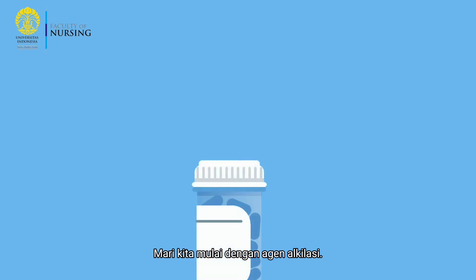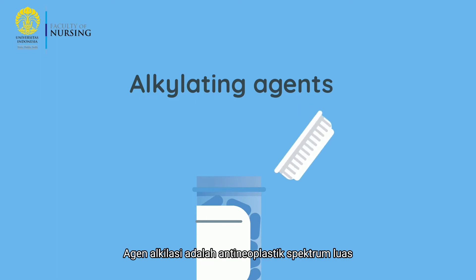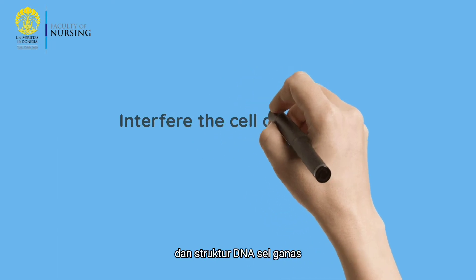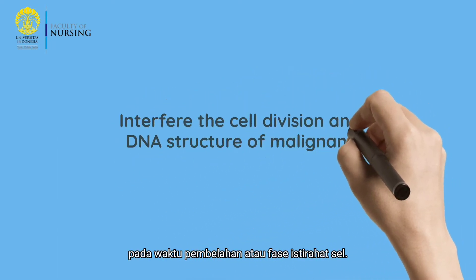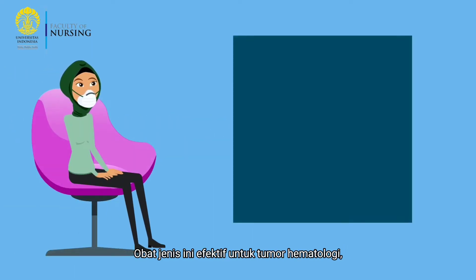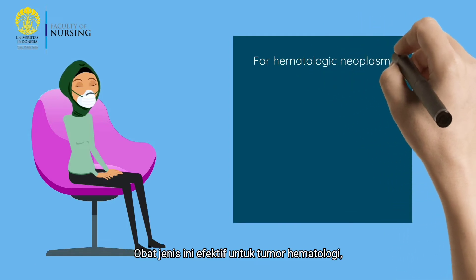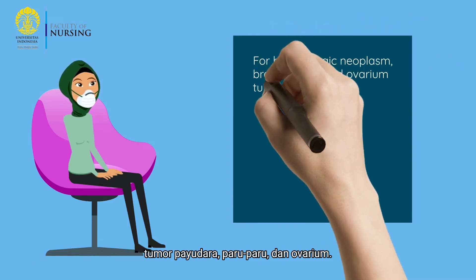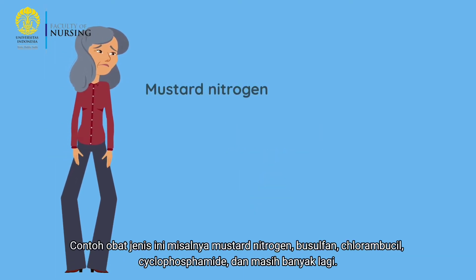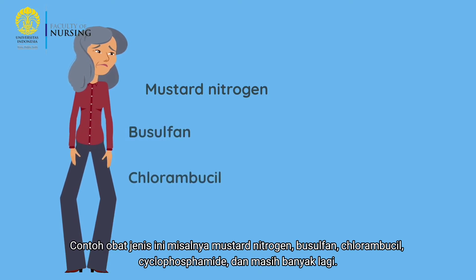Let's start with alkylating agents. Alkylating agents are broad-spectrum antineoplastics that work by interfering with cell division and the DNA structure of malignant cells at the cleavage time or resting phase of the cell. This type of drug is effective for hematologic neoplasms, breast, lung, and ovarian tumors. The side effect is that patients can suffer from spinal cord depression. Examples include mustard nitrogen, busulfan, chlorambucil, cyclophosphamide, and many more.